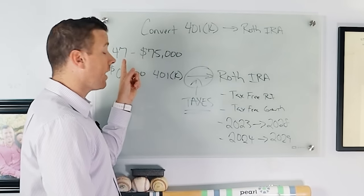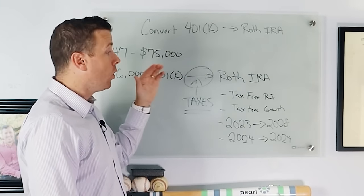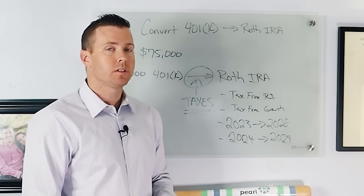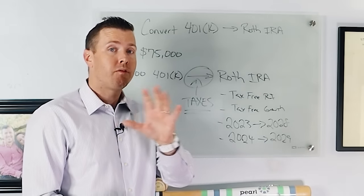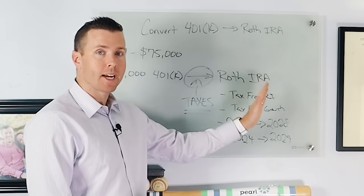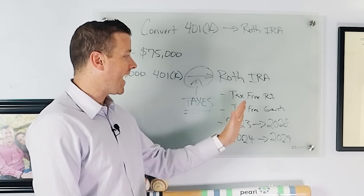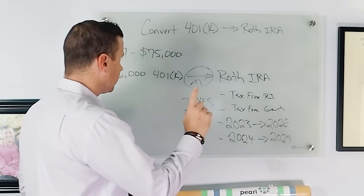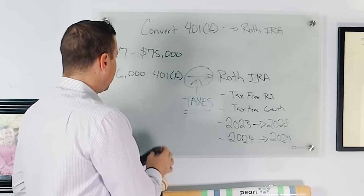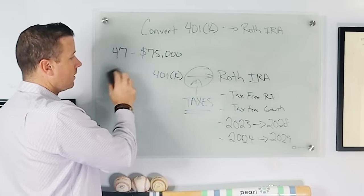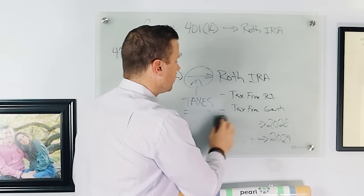So for this person at 47 years old, we're going to do the conversions, but he essentially has to wait till he's 59 and a half before he can take out the money tax-free for retirement income and tax-free growth. Now let's erase a couple numbers real quick. Let's take out this $6,000 number here and let's erase the conversions here.